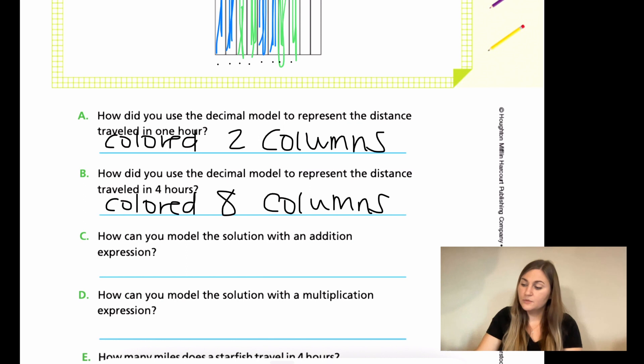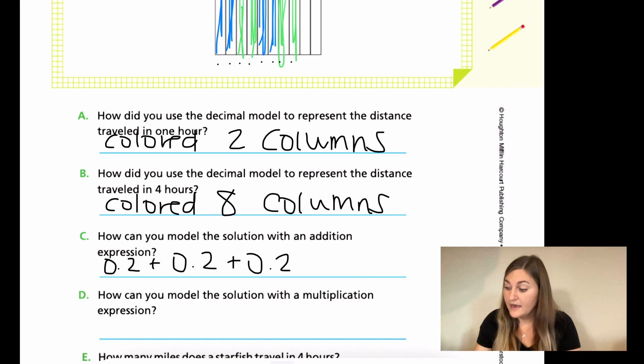Now, how can you model the solution with addition? This is what you did, but showing adding. So I did 0.2 and then another 0.2 and then another 0.2 and then another 0.2. Those are all being added together. So if you're writing an addition problem, you're just putting exactly what you're adding and then you're writing it how many times you did it. So it's four times. So I would write 0.2 four times.